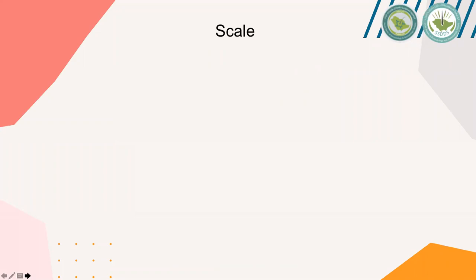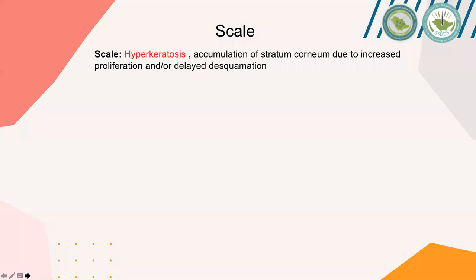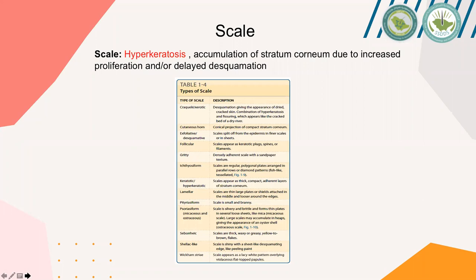Scale is hyperkeratosis. Hyperkeratosis means thickening of the epidermis due to thickening of the stratum corneum layer, which is the uppermost layer — in contrast to acanthosis, which involves the stratum spinosum layer. This is probably caused by either proliferation or delayed desquamation of this layer. A table summarizes all types of scales, and we will talk about a few important examples commonly seen in the clinic.